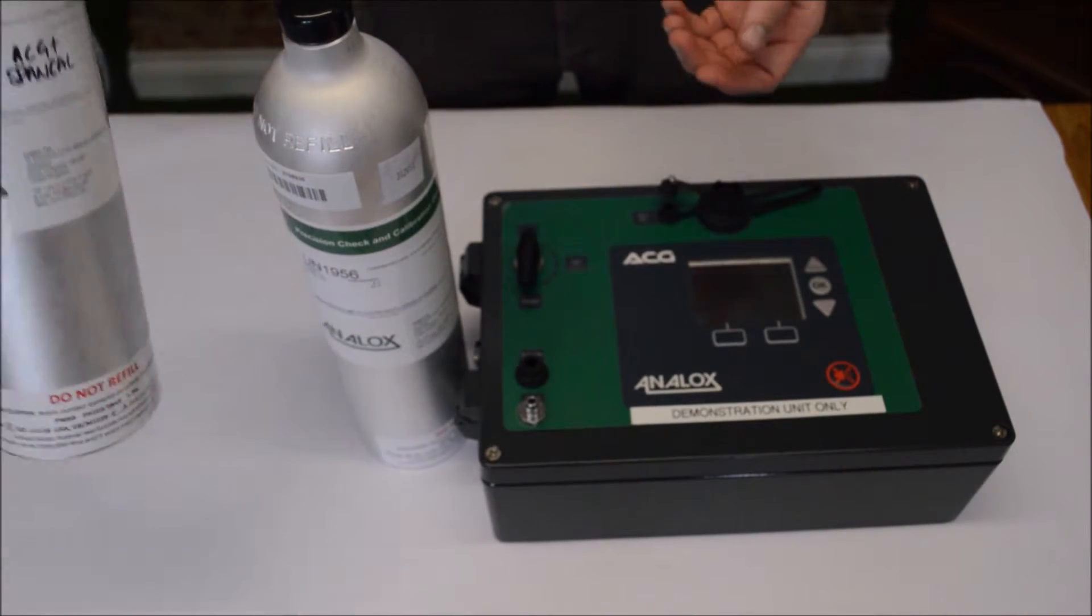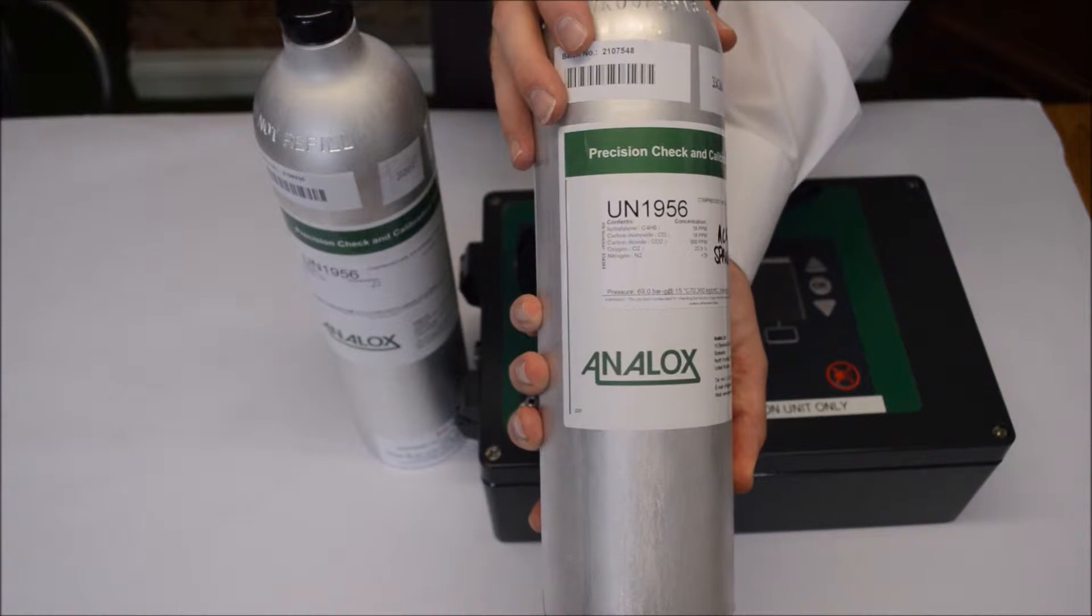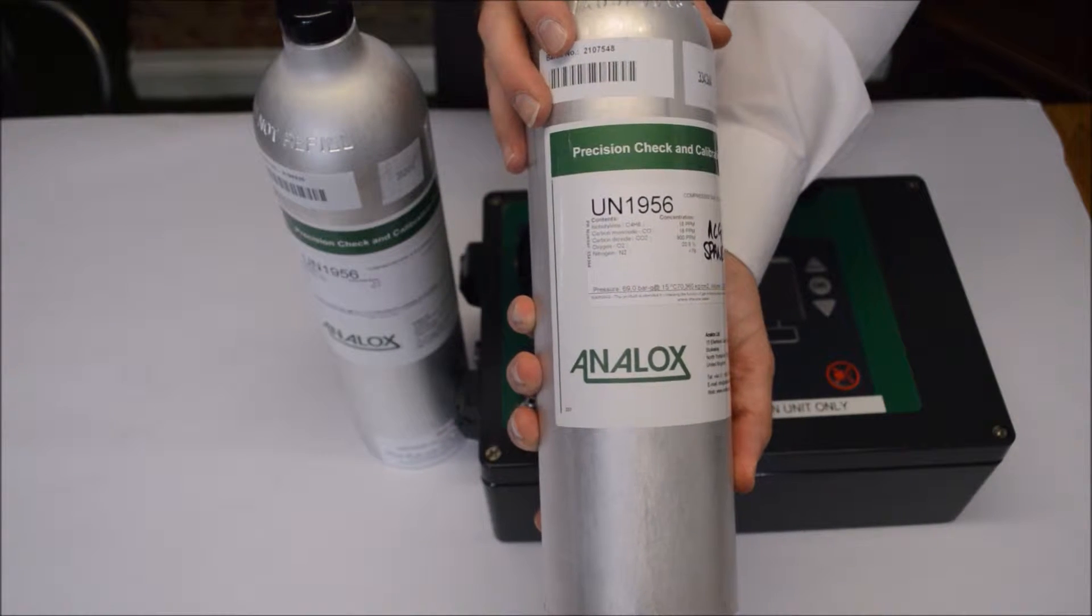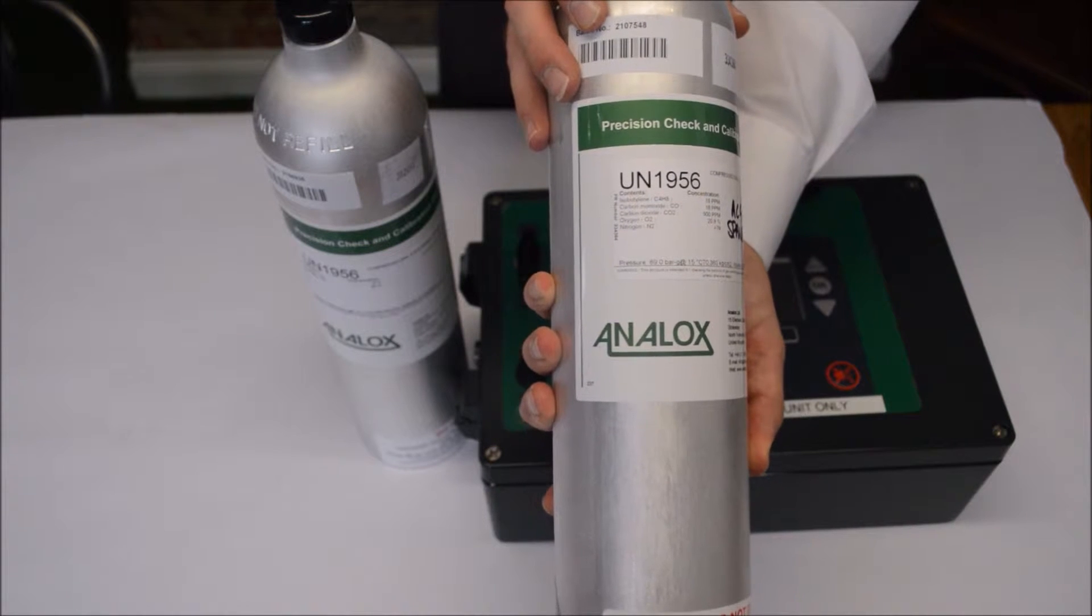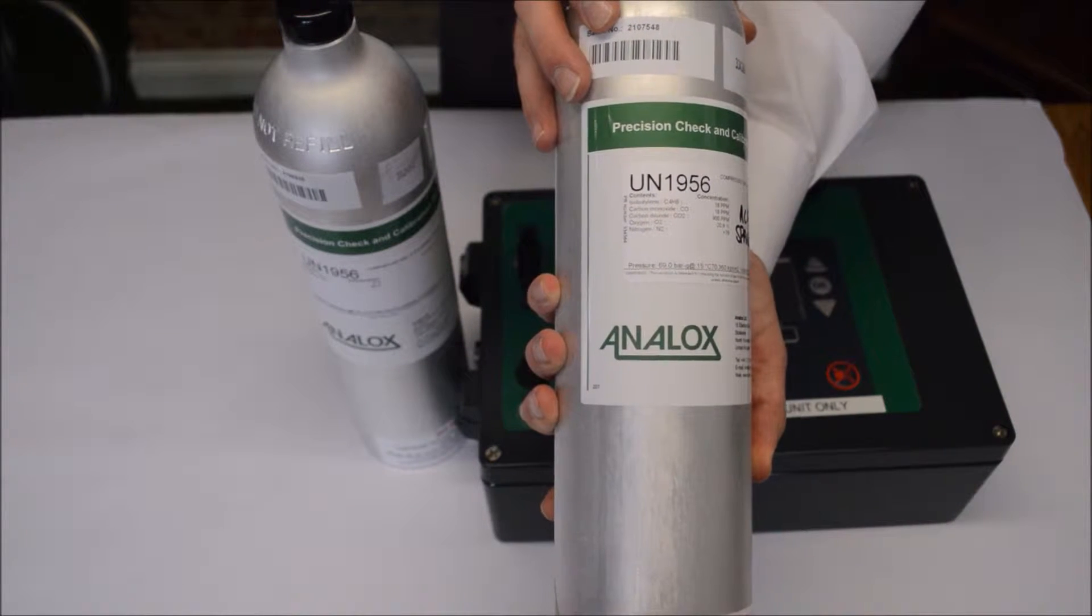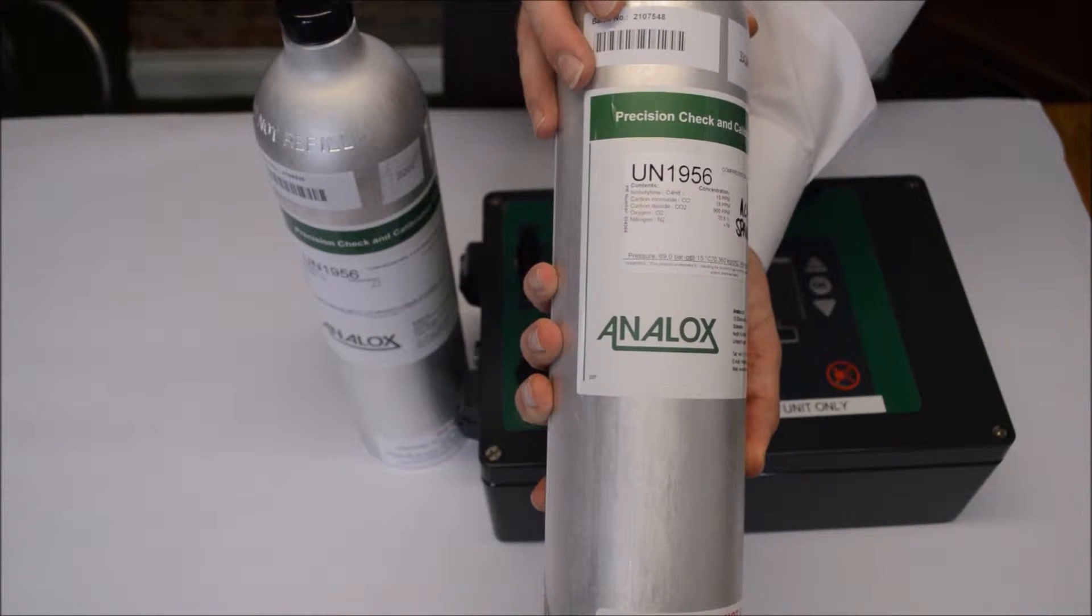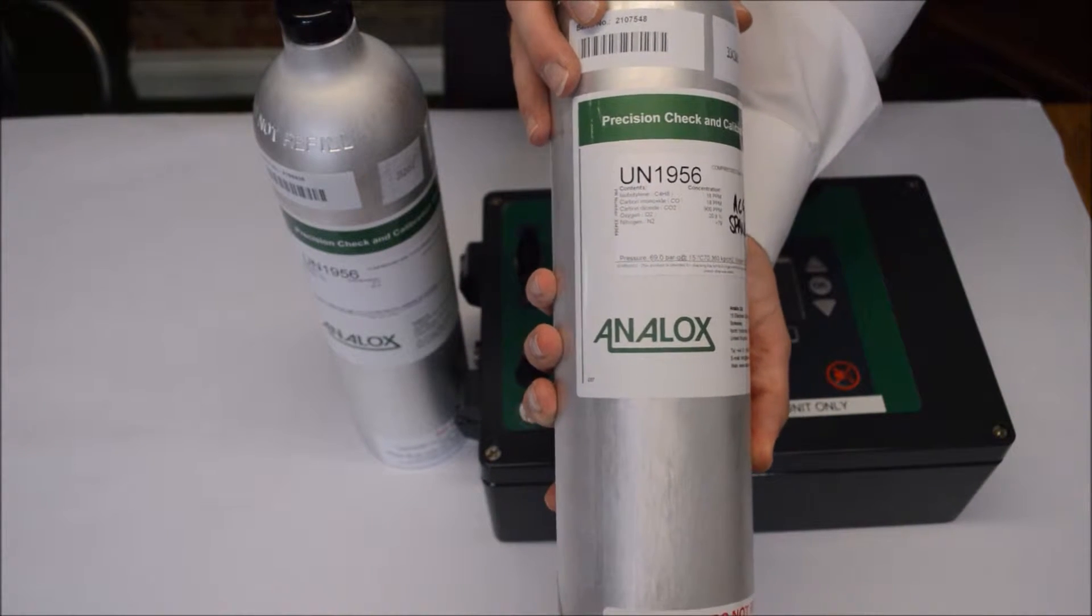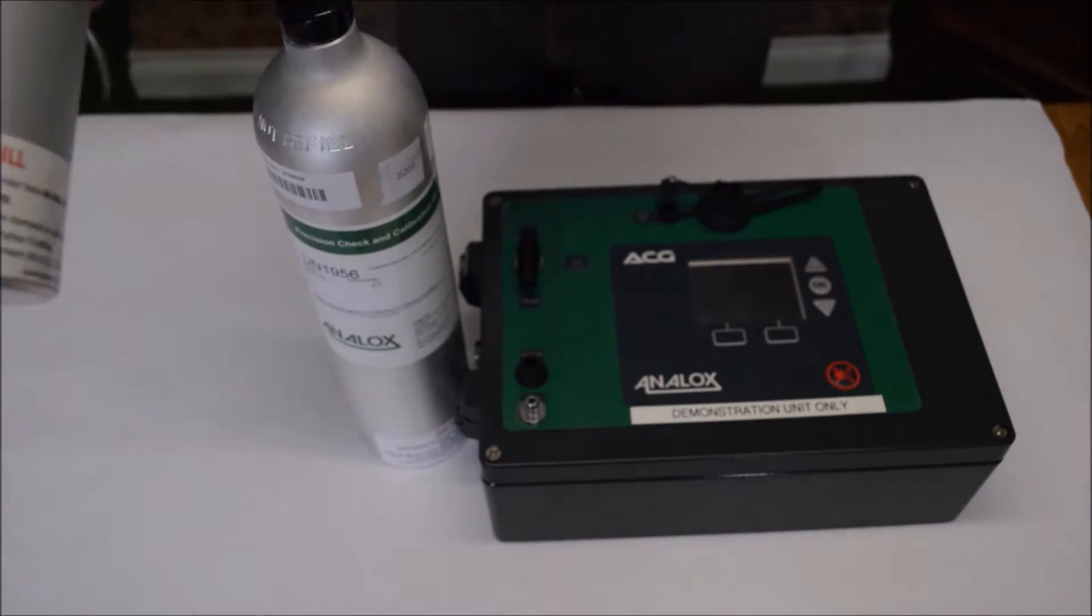Our span gas for the span calibration is this one, which is 18 ppm isobutylene, 18 ppm carbon monoxide, 900 ppm carbon dioxide, 20.9% oxygen and 79% nitrogen. That's the gas mixes that you require.